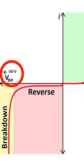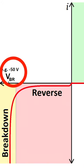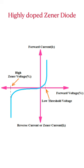Normal diodes may damage if applied reverse voltage is more than breakdown voltage. To work in this breakdown region, a special type of diode is made.